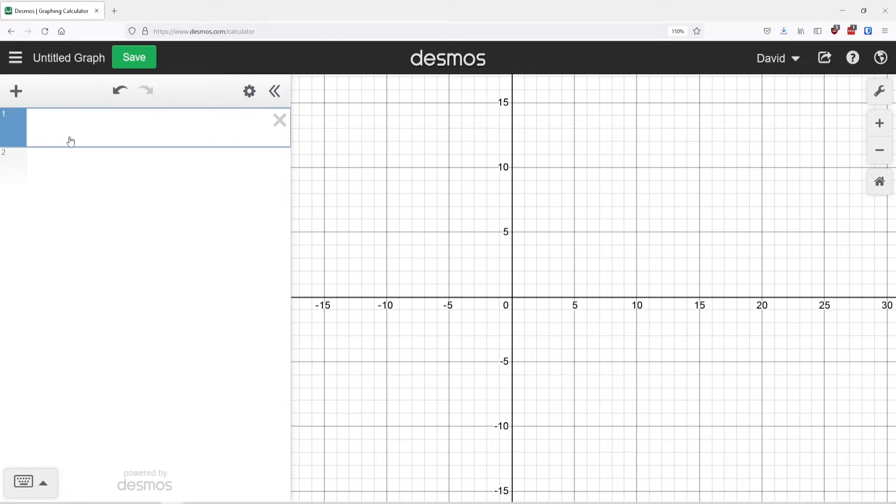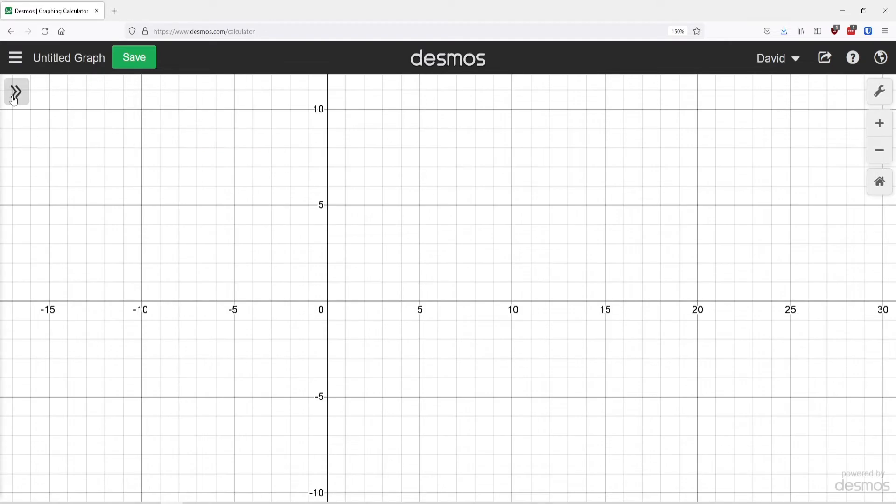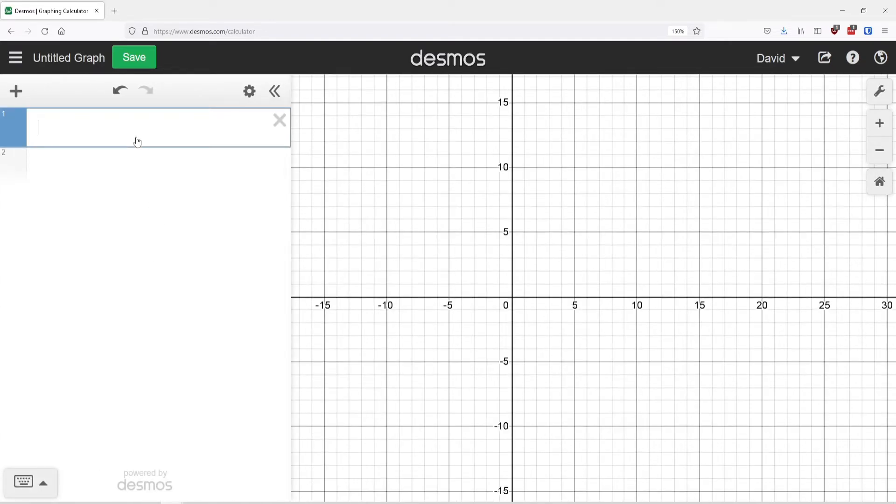When we launch Desmos and go to the calculator, we can see the graph on the right-hand side, and on the left-hand side there's the option to type in equations and other things we want to show up. We can collapse that or open it back up.